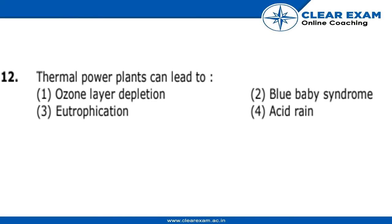This question asks us to find out which of these is caused by thermal power plants. Thermal power plants emit CO2 in great amounts; this CO2 combines with atmospheric moisture, and this moisture then leads to the formation of a compound.